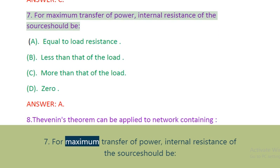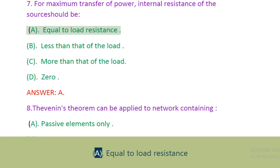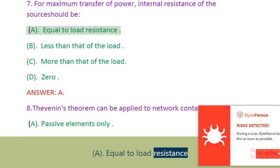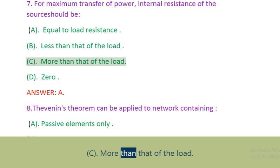Question 7: For maximum transfer of power, internal resistance of the source should be. A. Equal to load resistance. B. Less than that of the load. C. More than that of the load. D. Zero. Answer: A.